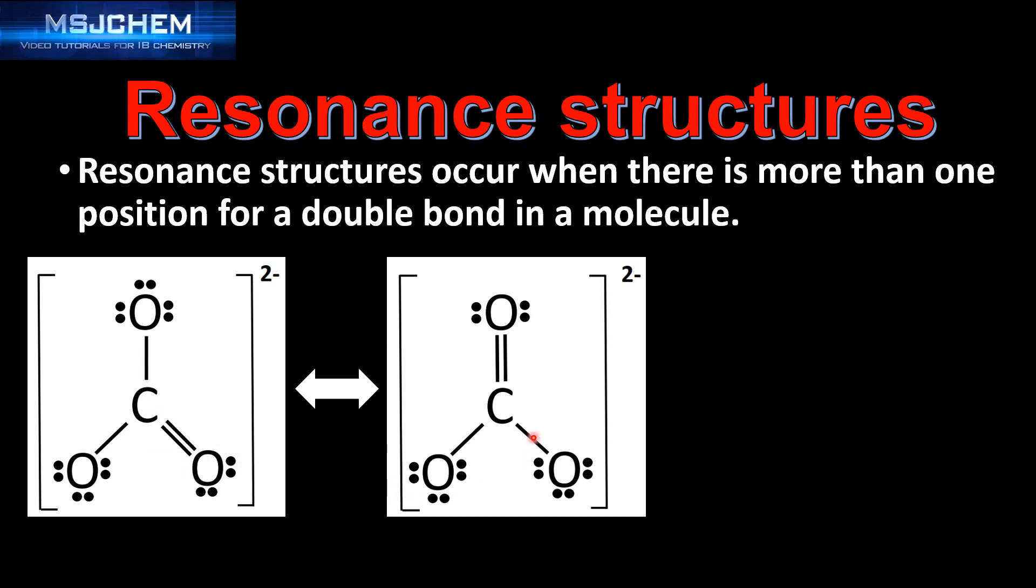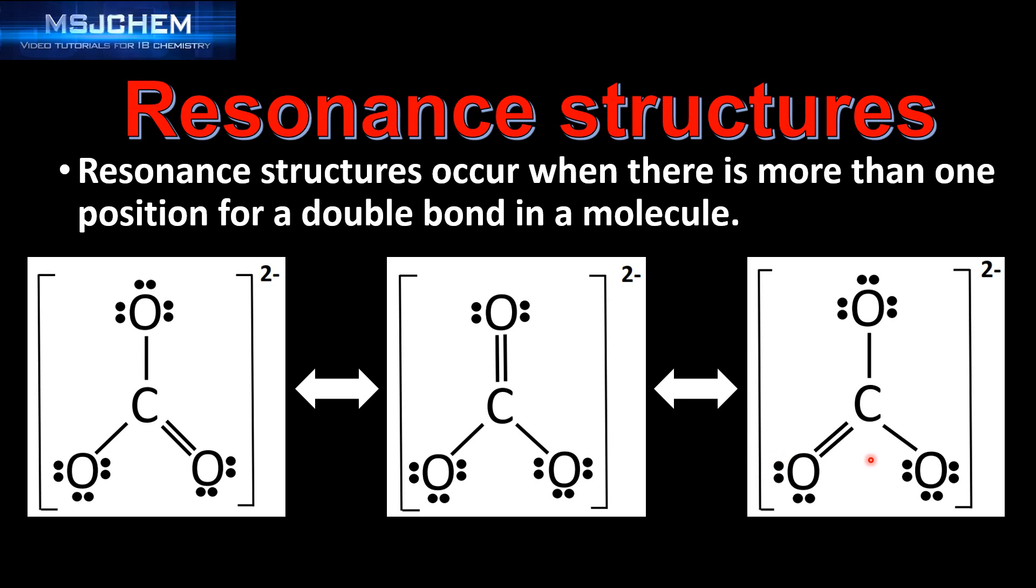I could draw another Lewis structure with a double bond in this position or another possible Lewis structure with a double bond in this position. These three Lewis structures are called resonance structures and they occur because there is more than one position for the double bond in the molecule.